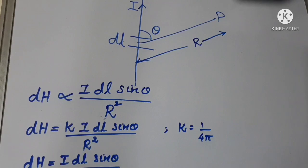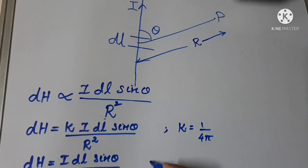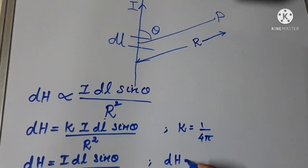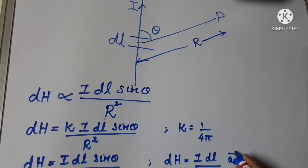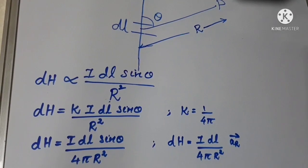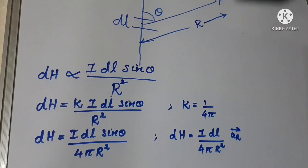This is the magnitude value for dH — the magnetic field intensity using Biot-Savart's law. In vector form, dH is equal to I dL cross aR vector divided by 4π R squared, where aR vector is the unit vector pointing from the differential current element to the point of interest.